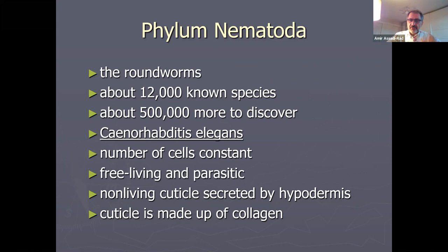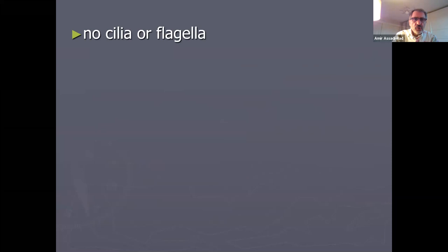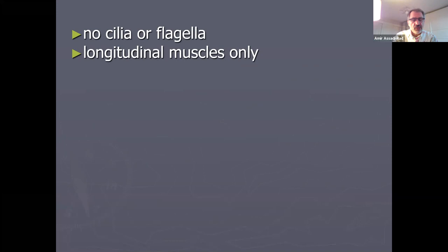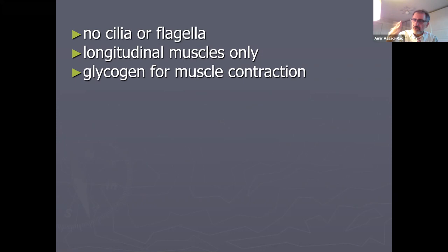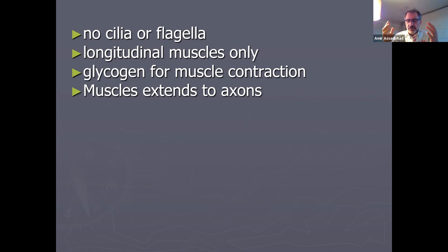Nematodes have a non-living cuticle secreted by the hypodermis underneath it. The cuticle is made up of collagen. They have no cellular flagella. They have longitudinal muscles only — no circular muscles. Glycogen is used by their muscle cells for contraction and cellular respiration. Nematoda is the only phylum in the animal kingdom where the muscle cells extend to the neuron — to the axon.